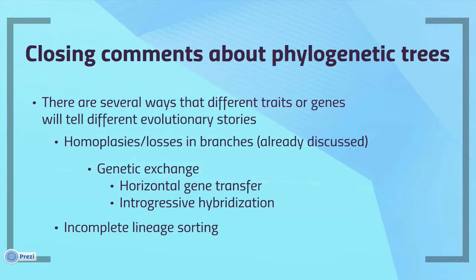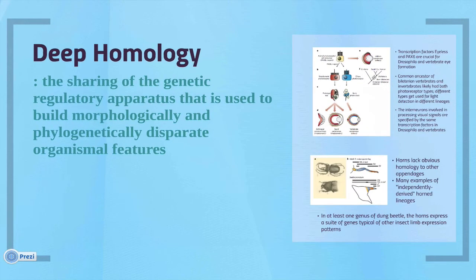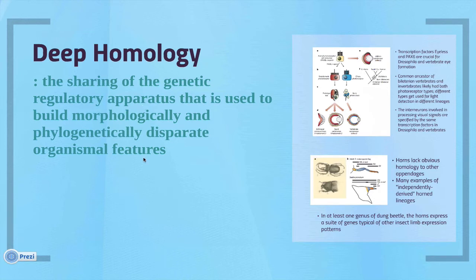Different traits or genes can tell different evolutionary stories because of homoplasies, losses in branches, genetic exchange, or incomplete lineage sorting. Now let's dive into the Schubin paper assigned as reading. It introduces the concept of deep homology — the idea that there are genetic regulatory apparatuses used to build morphologically and phylogenetically disparate organismal features. Things that look different on the surface may cryptically share underlying genetic regulatory machinery.